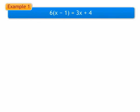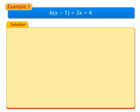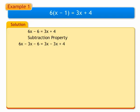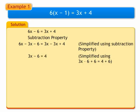Now, let us solve some examples. Example 1: 6 into bracket x minus 1 is equal to 3x plus 4. Multiply 6 into x and 6 into 1. We get 6x minus 6 is equal to 3x plus 4. On using subtraction property, we get 6x minus 3x minus 6 is equal to 3x minus 3x plus 4. Simplifying using subtraction property, we get 3x minus 6 is equal to 4. Using addition property, we get 3x is equal to 10.